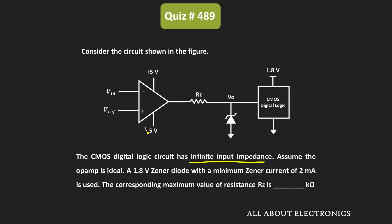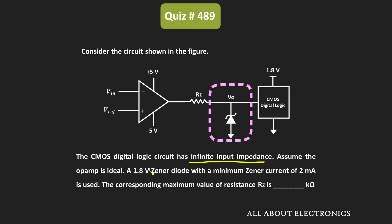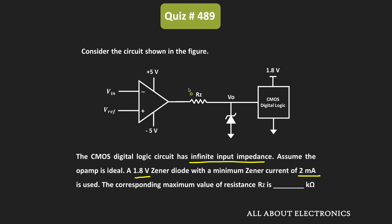Through the Zener diode, the output of the op-amp is given to this CMOS logic circuit. We have also been given the specifications for the Zener diode — the Zener voltage is equal to 1.8V, while the minimum required Zener current is equal to 2mA. We have been asked to find the maximum allowable value of resistor RZ such that this Zener diode works properly.